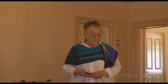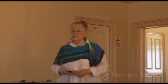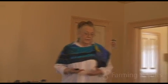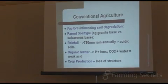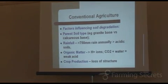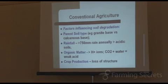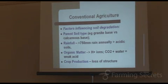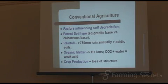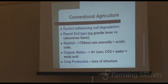Organic matter — basically plant material — hydrogen ions, so pH related, carbon dioxide in water gives you a weak acid, and so you get those breakdowns of the elements that are locked into the soil, so pH is very important. And then because of that loss of structure, that's going to affect our crop production — regardless of what the crop is, whether it's pasture, grapevines, lettuce, or some sort of annual crop — production is going to be affected because of the loss of structure of the soil.